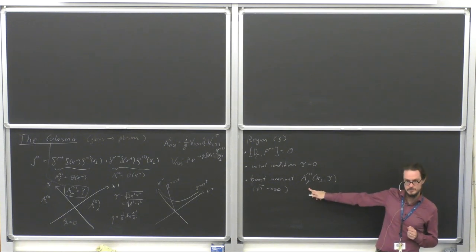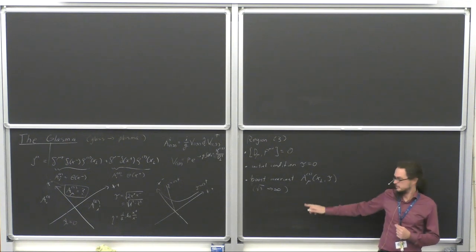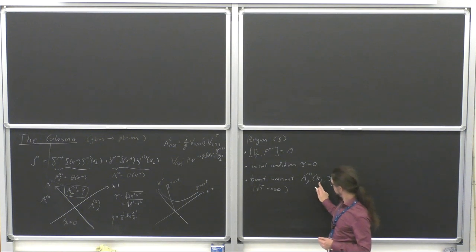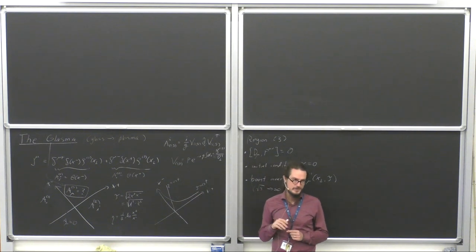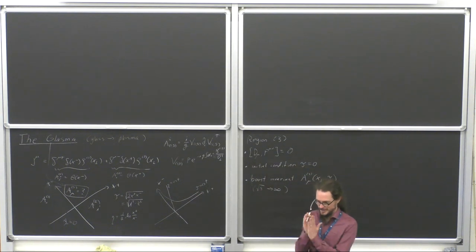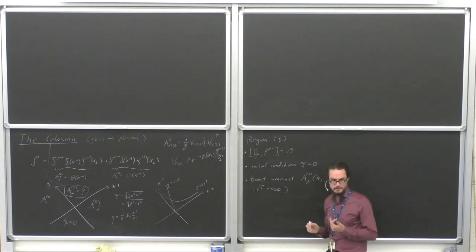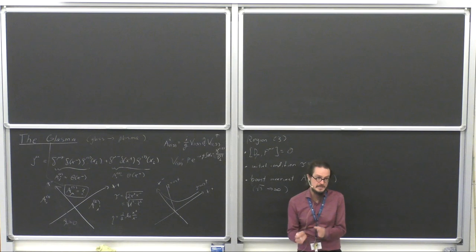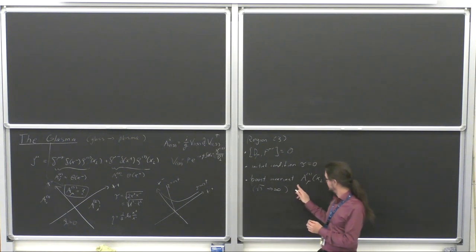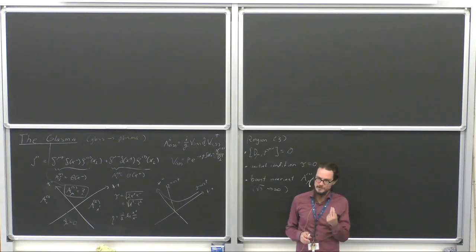Here we have a boost invariance at the level of the fields, which is a much stronger condition. The rapidity is a longitudinal coordinate — a boost invariant version of the z-coordinate. The fact that these fields do not depend on eta means that their derivatives with respect to eta are zero, and the derivative of a field with respect to a coordinate is the momentum. So this means that these fields, in a Lorentz covariant or boost invariant sense, do not have longitudinal momentum.